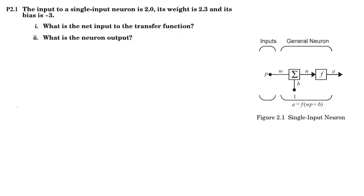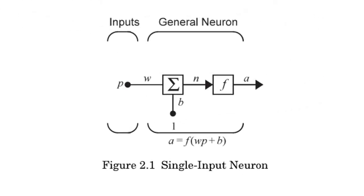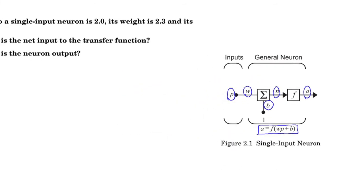The first question is about a single input single output neuron. So P is the input to the neuron and A is the output of the neuron. And N is the input to the transfer function F. W is the weight and B is bias. And for calculating output of a neuron we use this formula.